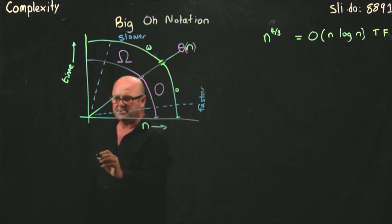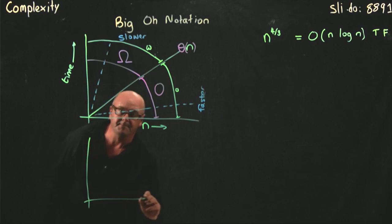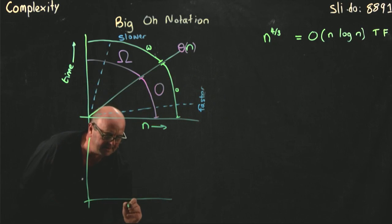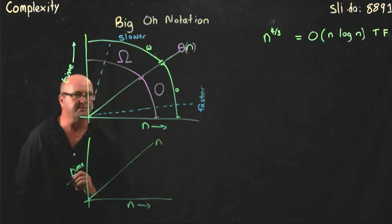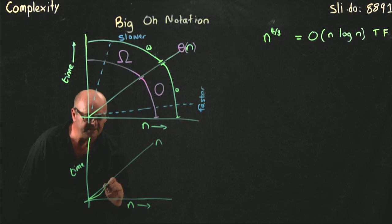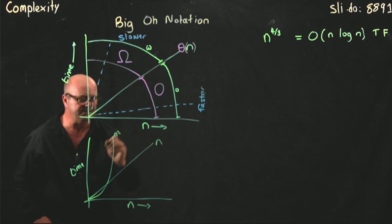Let's take the example that I showed earlier, where I have n and time. Here's an algorithm that grows at the rate of n, and here's an algorithm that grows at the rate of n squared.